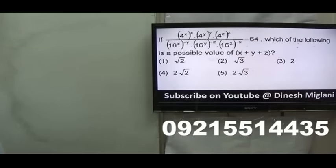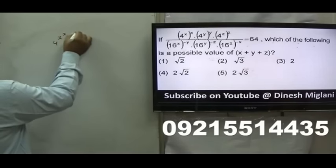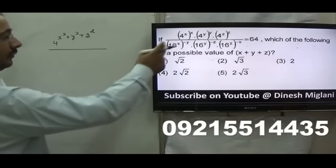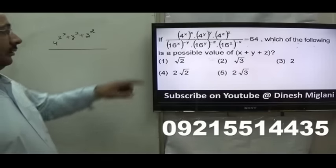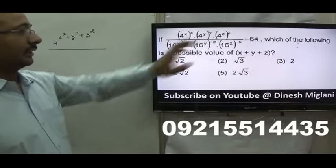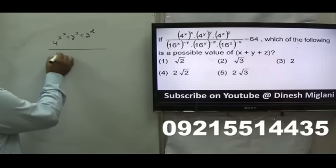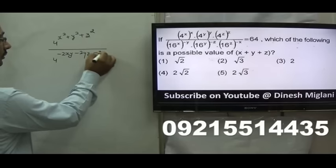The next question: we are given 4 raised to power X, such that 4^(x² + y² + z²). When I look at the denominator, if I take 4², that is 4 raised to power 2X. Here it would be 16, 16, 16. We have to multiply, so what I can say is 4 raised to power (−2XY − 2YZ − 2ZX), which equals 64.